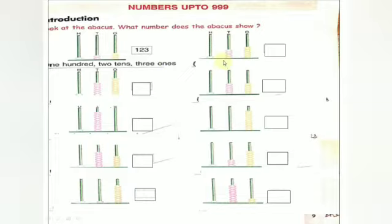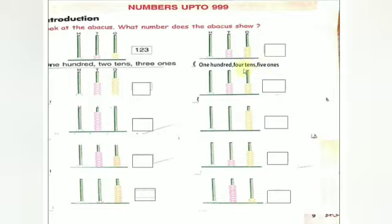Understood, children? Now come to the next one. In the 100's place, 1 bead — so 100. In the 10's place, 4 beads — so 4 tens. In the 1's place, 5 beads — so 5 ones. So you will write 145. Ok children, understood?